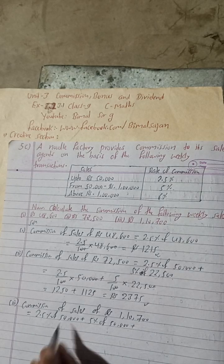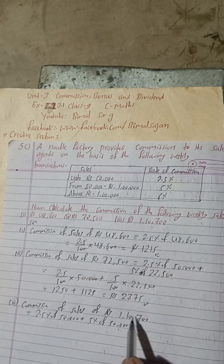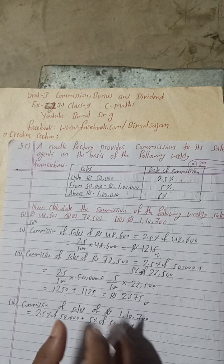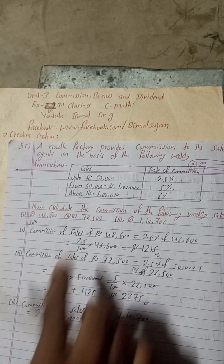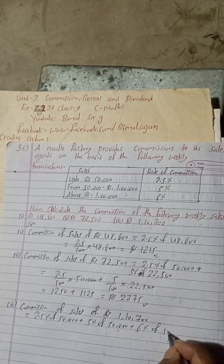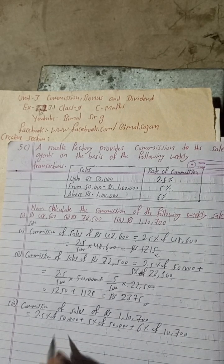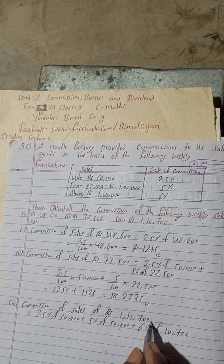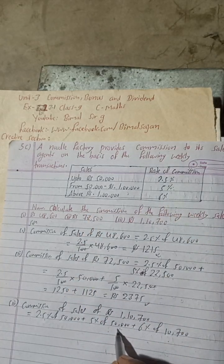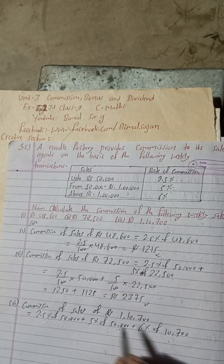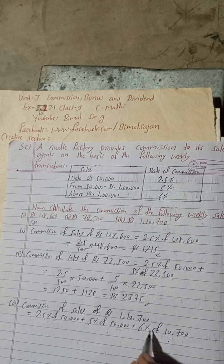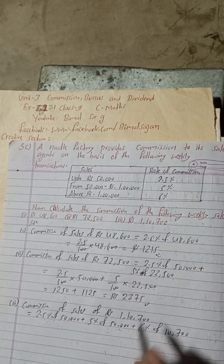The total so far covers up to Rs 1,00,000. The total sale is Rs 1,10,700, so the remaining amount above Rs 1,00,000 is Rs 10,700. Since this is above Rs 1,00,000, we apply 6% to Rs 10,700. So commission = 2.5% of Rs 50,000 + 5% of Rs 50,000 + 6% of Rs 10,700.